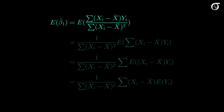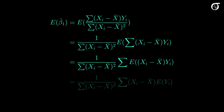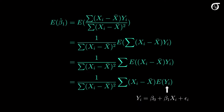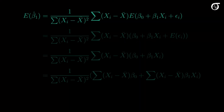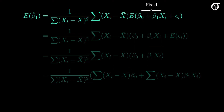Let's first find the expectation of beta1 hat. First note that in the denominator, the sum of squares of x is a constant and can thus be taken outside the expectation. And we know that the expectation of a sum is the sum of the expectations, so we can take the expectation inside the summation. The x's are assumed to be fixed, and so they too can come outside of the expectation.